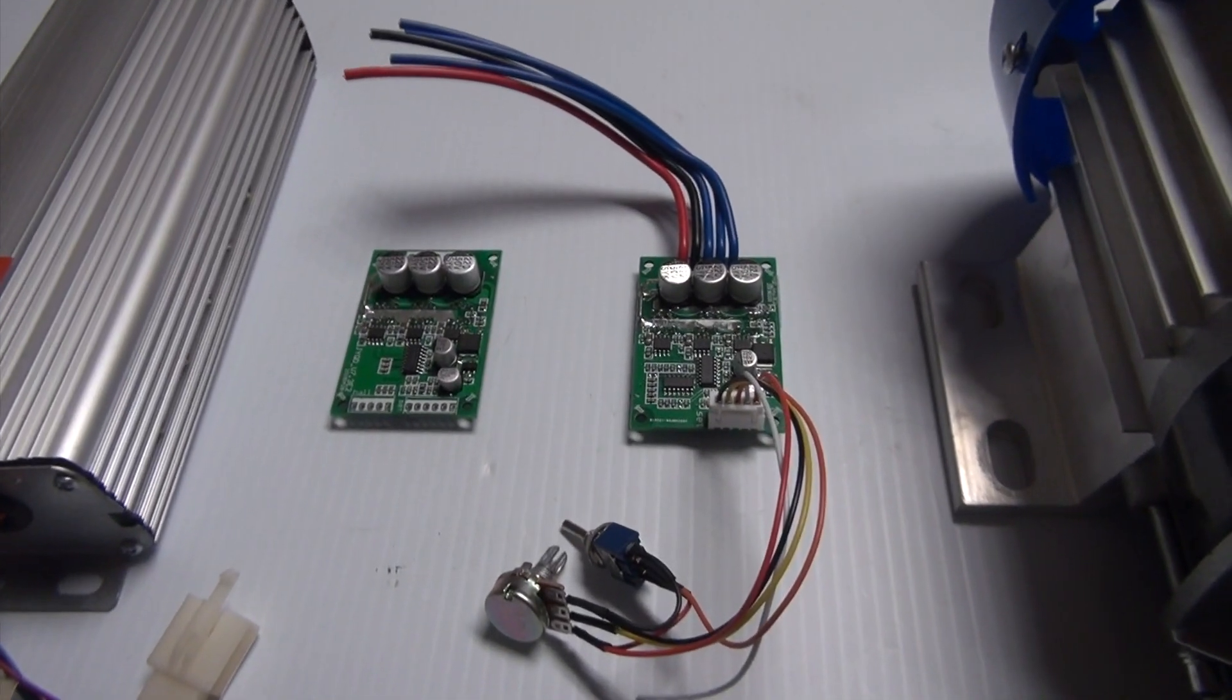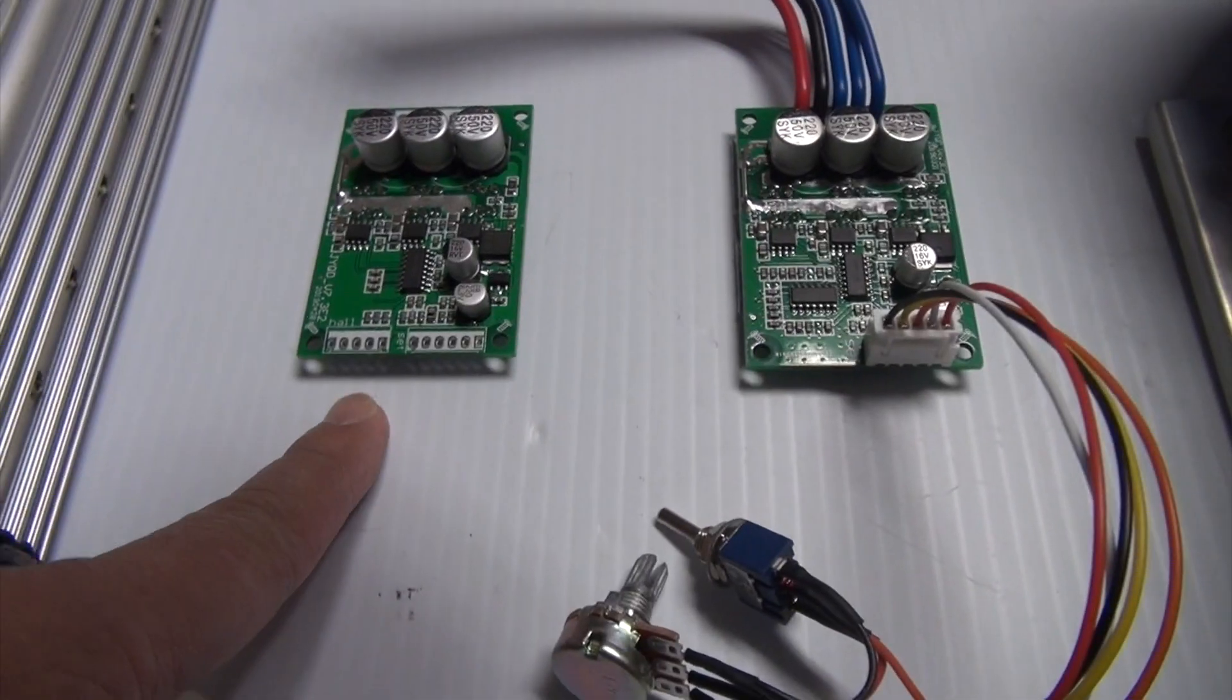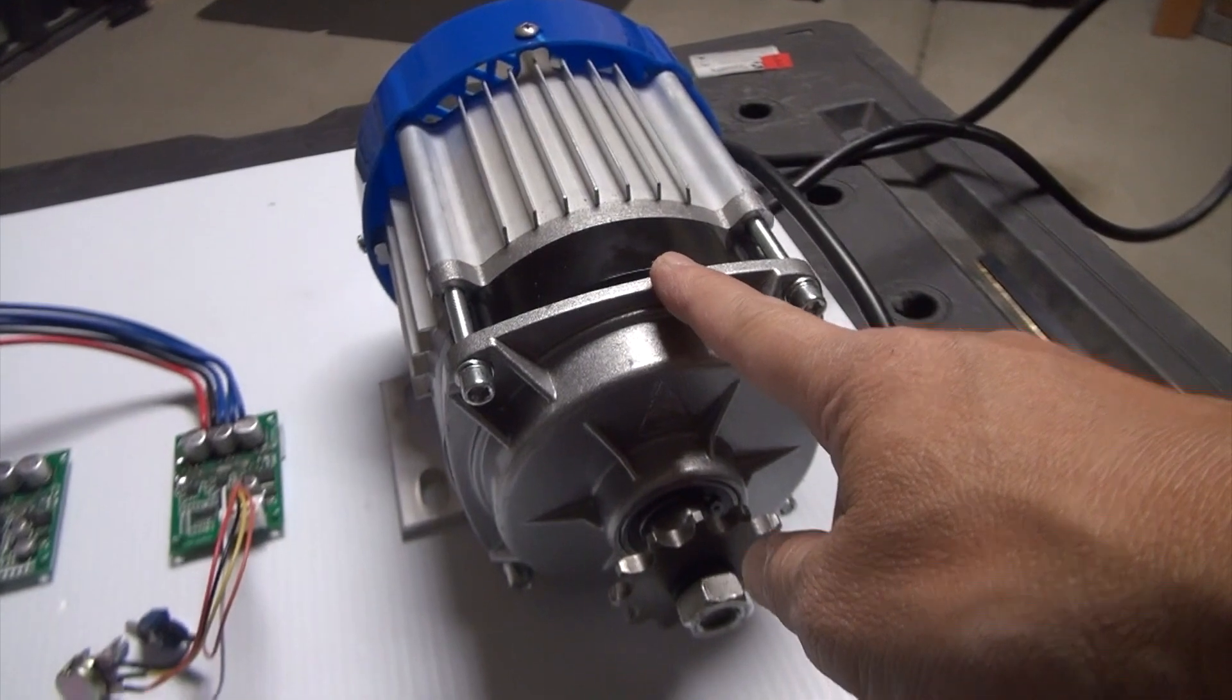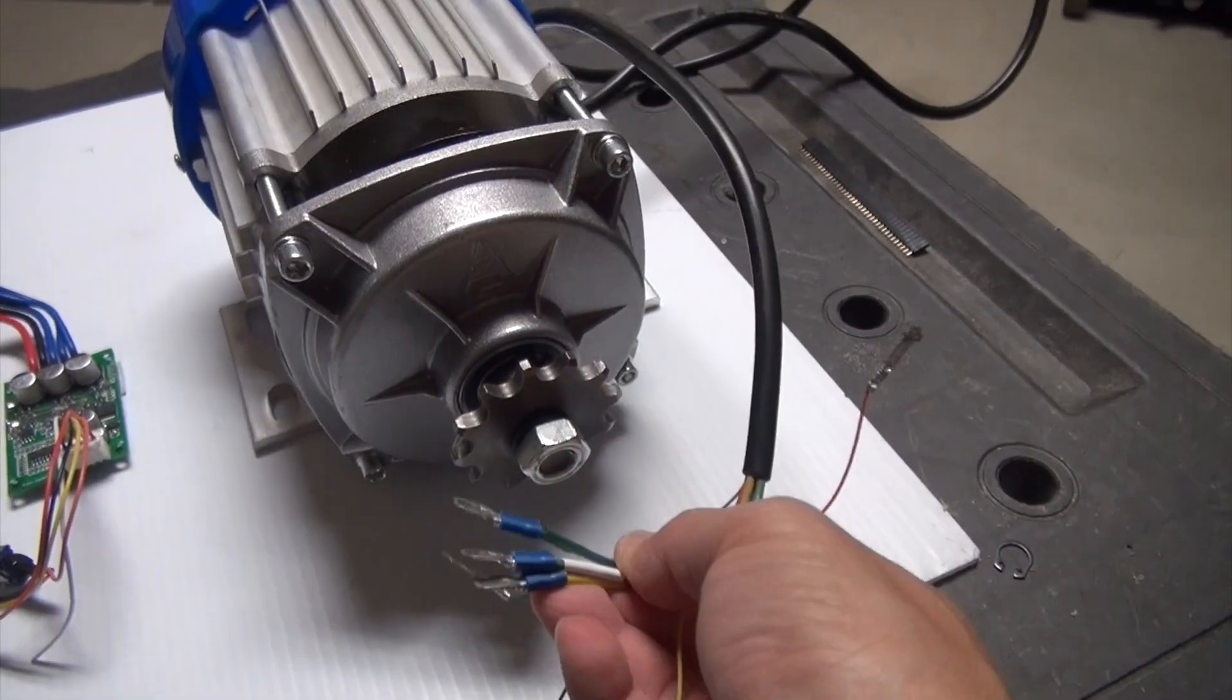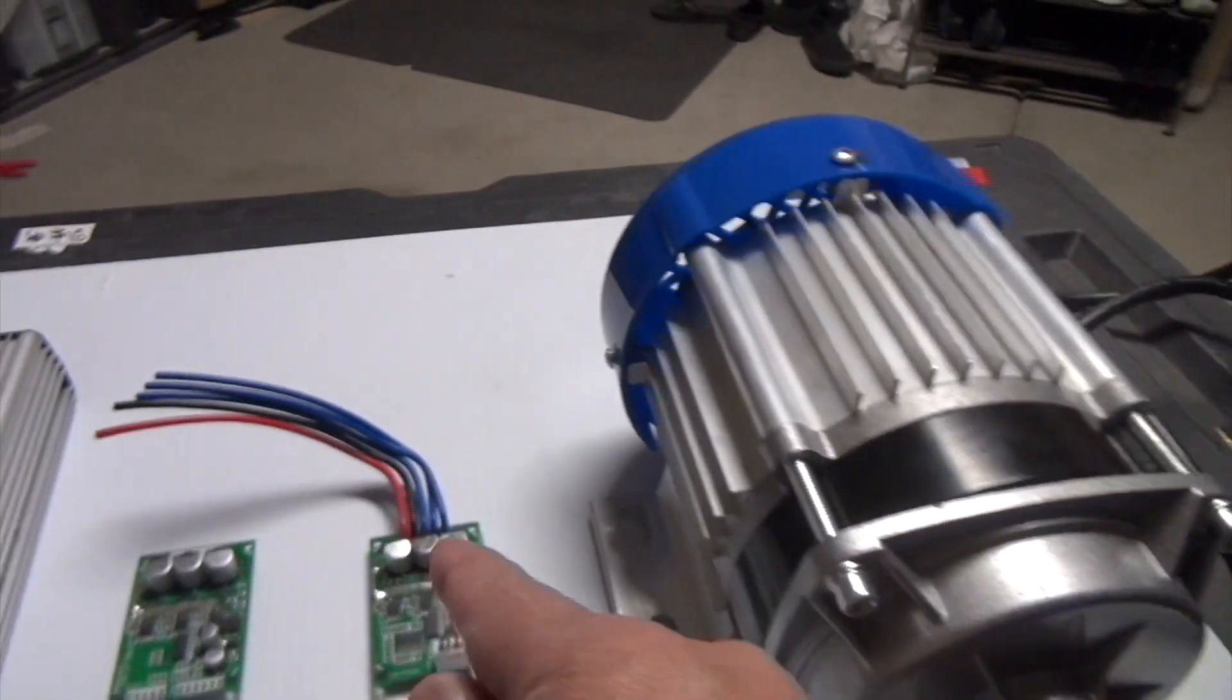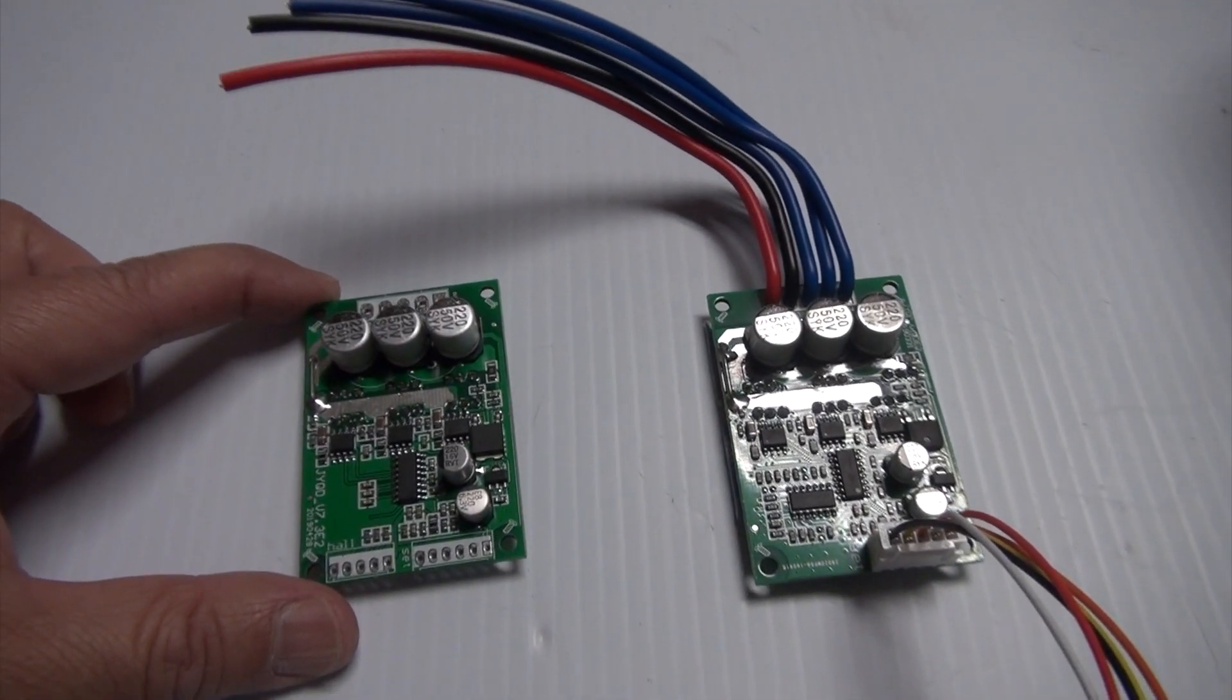But today we're just going to cover the differences between the sensorless controller and the sensor controller. In the process, I'm going to open up this electric motor so I can take a look at the wiring configuration and the color associated with the phases of the motor. So first, let's touch base on each controller here.